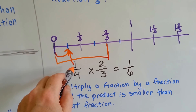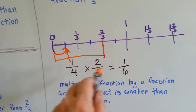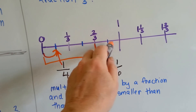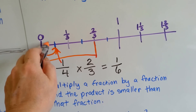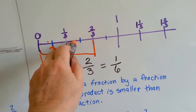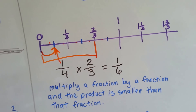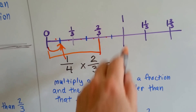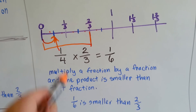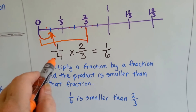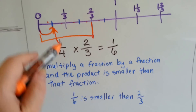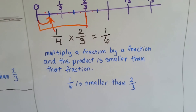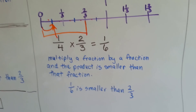This is one-fourth of the two-thirds — it's one of the four pieces. But how much is it as a fraction? If you counted all of these little pieces, we'd have one, two, three, four, five, six. We've got one-sixth as our answer. So, multiplying a fraction by a fraction, we ended up with a smaller amount than the two-thirds. One-sixth is smaller than two-thirds.